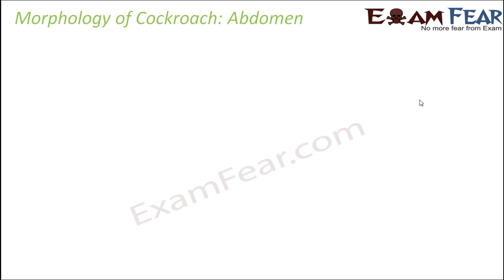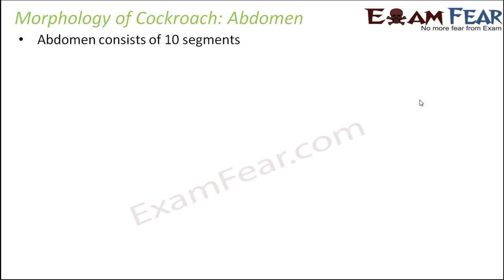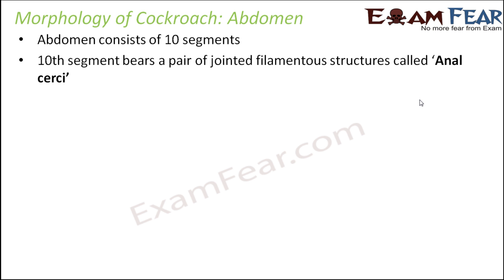The third region of the cockroach is the abdomen, which is one of the longest segments. It consists of 10 segments and is well segmented. There are differences between the abdomen of male and female cockroaches. The tenth segment, the last segment, bears a pair of jointed filamentous structures called anal cerci.